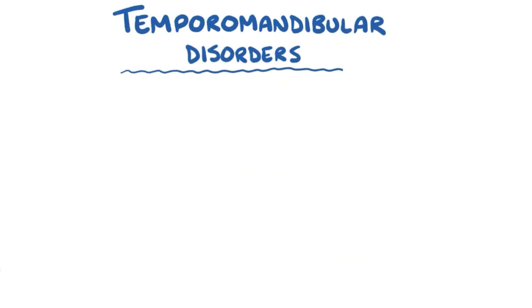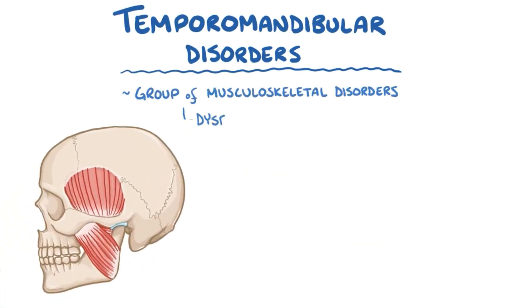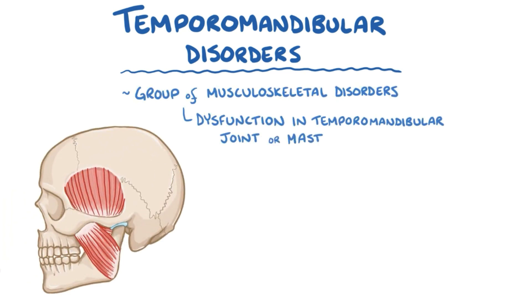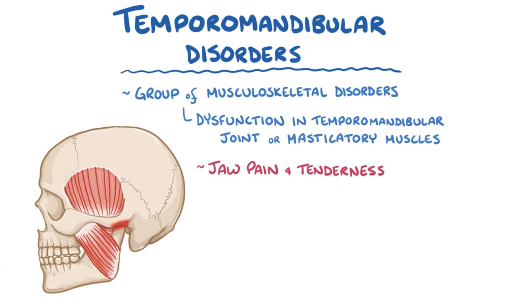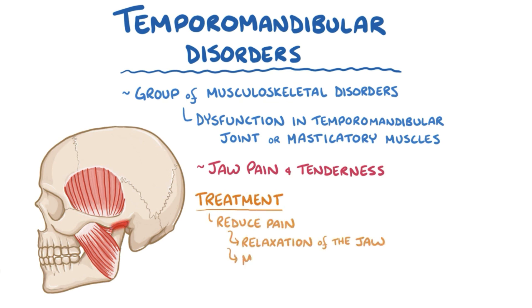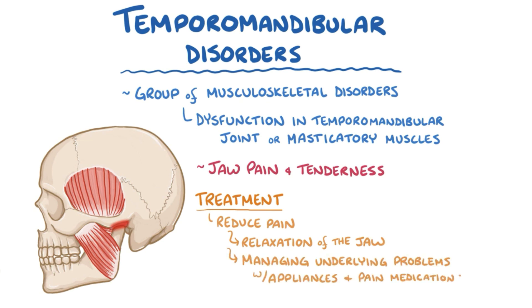As a quick recap, temporomandibular disorders are a group of musculoskeletal disorders that result from dysfunction in the temporomandibular joint or masticatory muscles controlling the jaw. The result is jaw pain and tenderness. A key goal of treatment is to reduce pain, and this can be done with relaxation of the jaw, as well as managing underlying problems like bruxism with oral appliances and the use of pain medications.